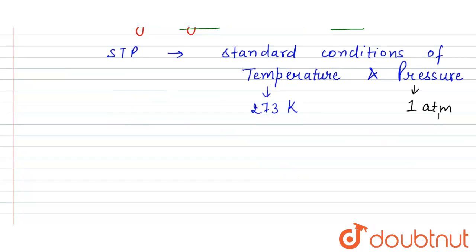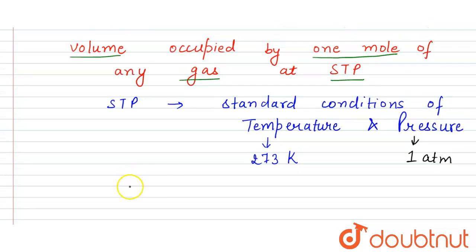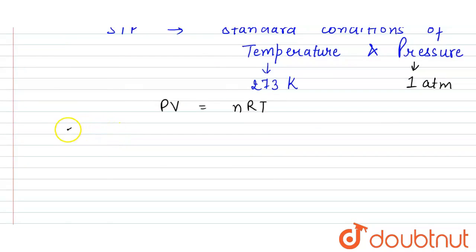By using these three things we can also calculate the molar volume by the equation PV equals nRT, equation for any ideal gas. So here pressure is one atmosphere.